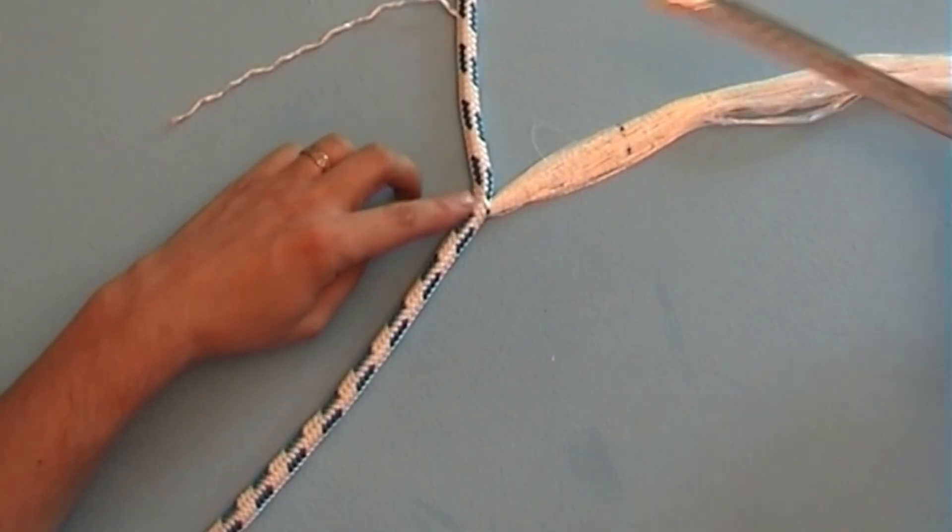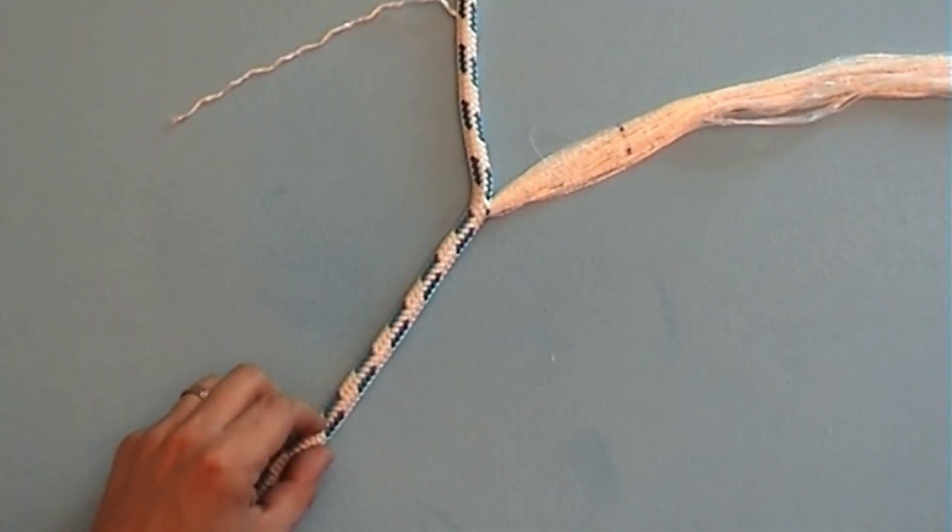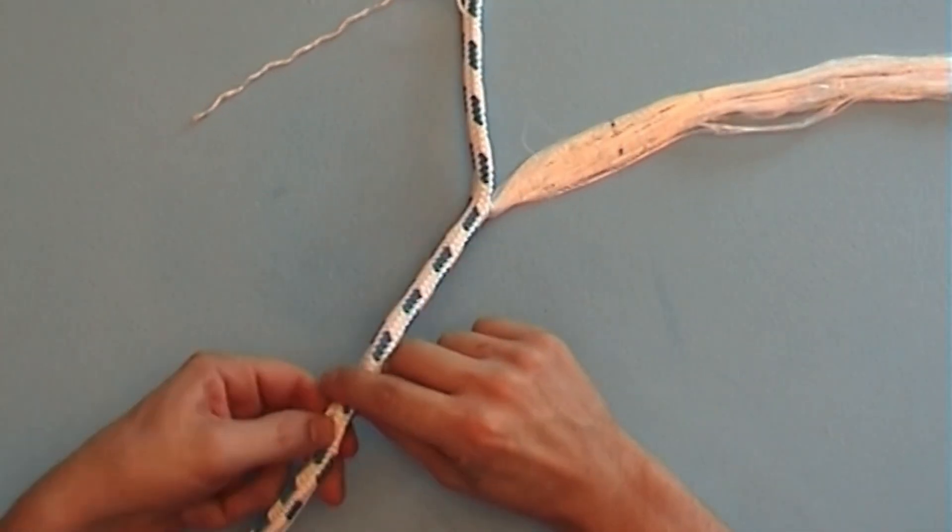From the exit point of the core, measure once more 14 times the rope diameter and go in at that spot with the splicing needle.